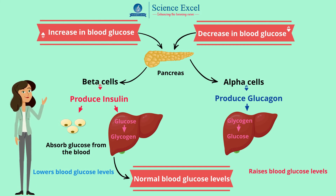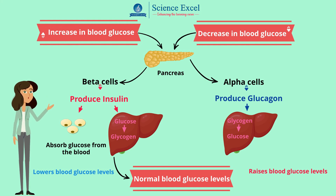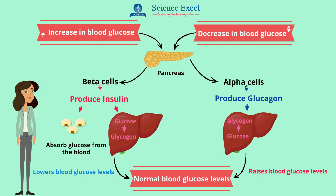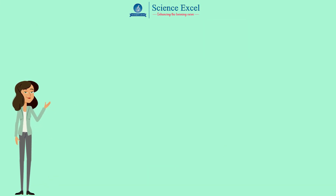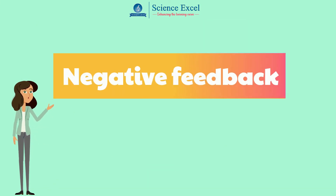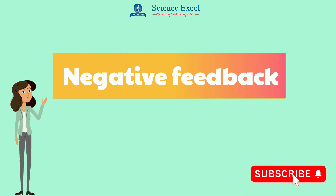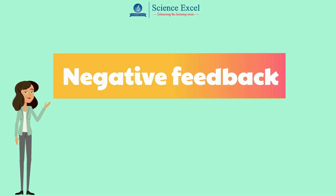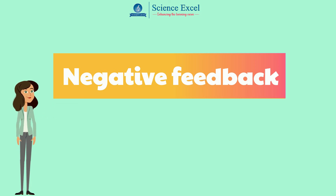This glucose is then used by our body cells to produce energy. Finally, the glucagon secretion reduces, which brings the system back to homeostasis. This is an example of negative feedback. It helps to keep our blood sugar levels well within the set limits, ensuring that our body has a steady supply of energy, hence maintaining homeostasis.